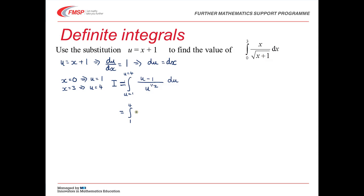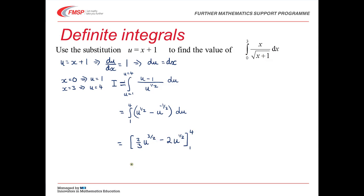Splitting the fraction: u over u to the half is u to the half, minus 1 over u to the half which is u to the minus a half. Integrating gives two thirds u to the 3 over 2 minus 2u to the half, evaluated from 1 to 4. At u equals 4: two thirds times 8 minus 2 times 2 equals 16 thirds minus 4. At u equals 1: two thirds minus 2. So the answer is 14 thirds minus 2, which is 8 thirds.